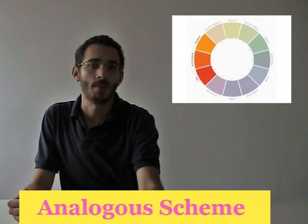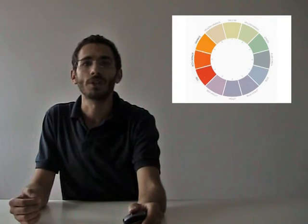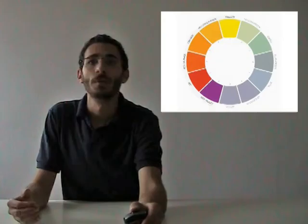The final color scheme that we will discuss is the analogous color scheme. Analogous colors neighbor each other on the color wheel. Examples of analogous schemes would be red, red-orange, and orange, or blue, blue-green, and green.